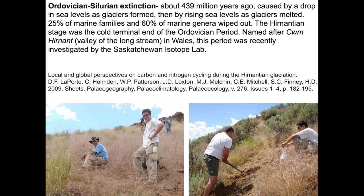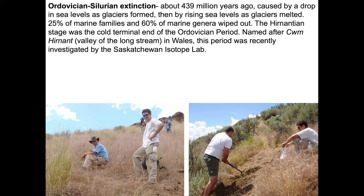At the end of the Ordovician, the Ordovician-Silurian mass extinction took place about 439 million years ago, related to rapidly changing sea level. Sea level dropped rapidly when we had the onset of glaciation. It rose rapidly, very short and very sharp, and then went down again rapidly. So we had two massive glaciations appearing close together, resulting in 25 percent of marine families and about 60 percent of marine genera being wiped out. The Hirnantian extinction is the cold terminal end of the Ordovician period, named after Cwm Hirnant. Cwm is a Welsh word — it means a valley.